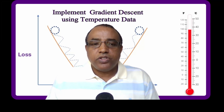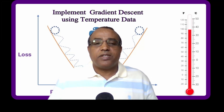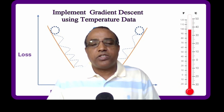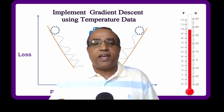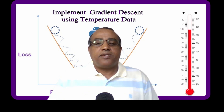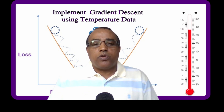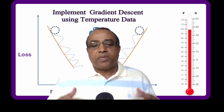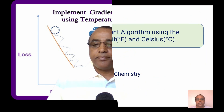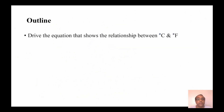Hello everyone. In this video I'll show you how the gradient descent algorithm works using the relationship between degree Fahrenheit and degree Celsius. First, I'll show you how to derive the equation that shows the relationship between degree Fahrenheit and degree Celsius using the freezing and boiling point of water.